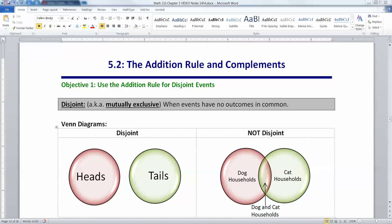In section 5.1 we learned the basic rules and definitions of probability, then the difference between classical and empirical probability. In section 5.2 we want to expand on these themes and talk about the addition rule and complements.